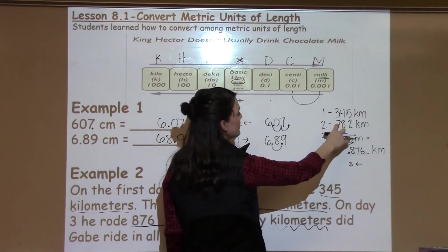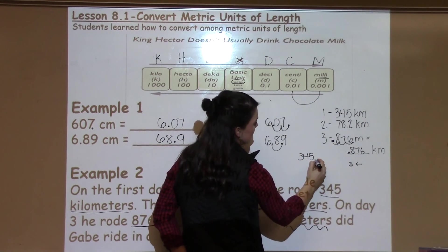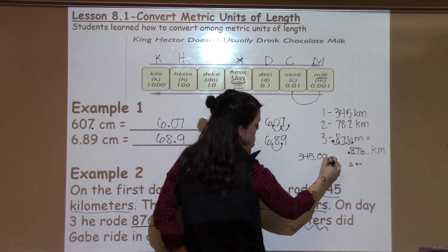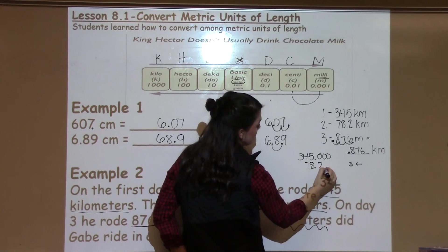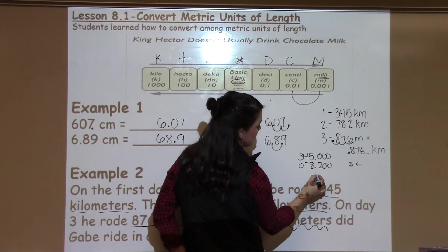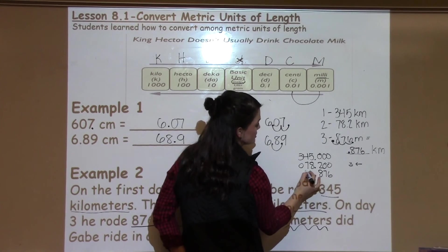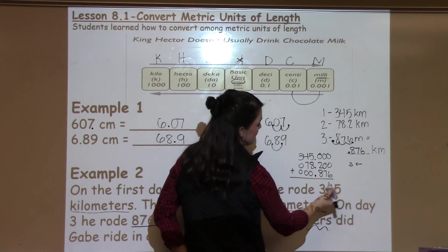So now that I have all three days in kilometers, it's going to be very easy to go ahead and add those up. Now students will need to remember that when they are adding with decimals, they have to line up the decimal point even if that means they need to add some zeros to the front or back to help them line up all of the numbers.